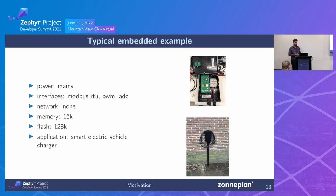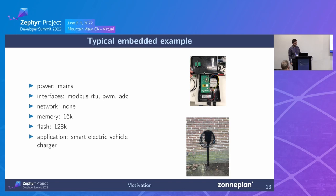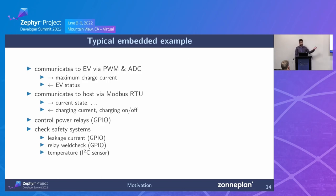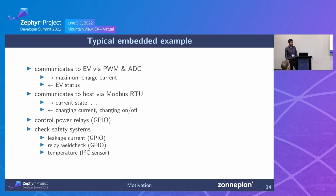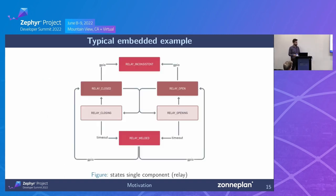The best way to motivate is to show a real application. A few months ago we started a project: a smart EV charger. It's a really good typical embedded example — mains powered, needs to be really safe because you don't want your car or house on fire. It has a simple interface: Modbus, PWM, and ADC. Very limited memory — 16K RAM and a bit more flash. We communicate to the EV by PWM and ADC, control some relays to charge the car, and have a bunch of safety systems including leakage current detection, relay weld check, and temperature monitoring.